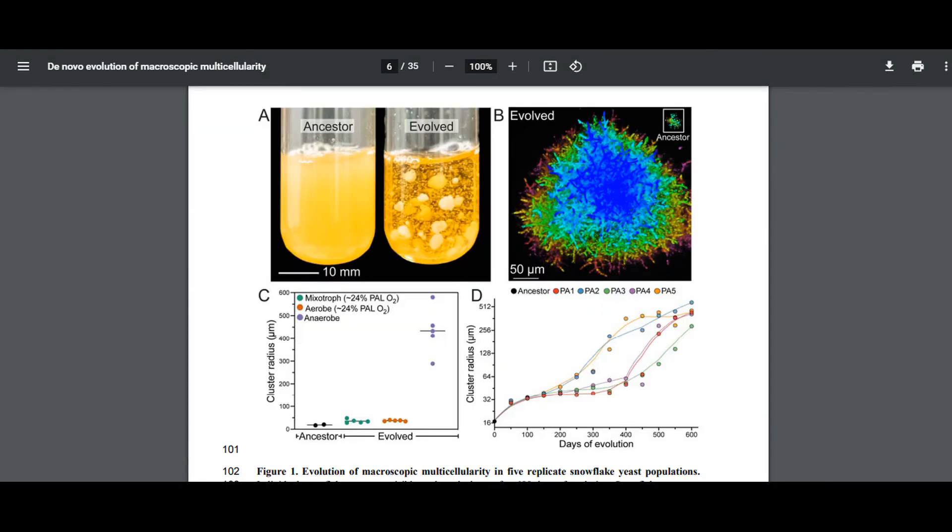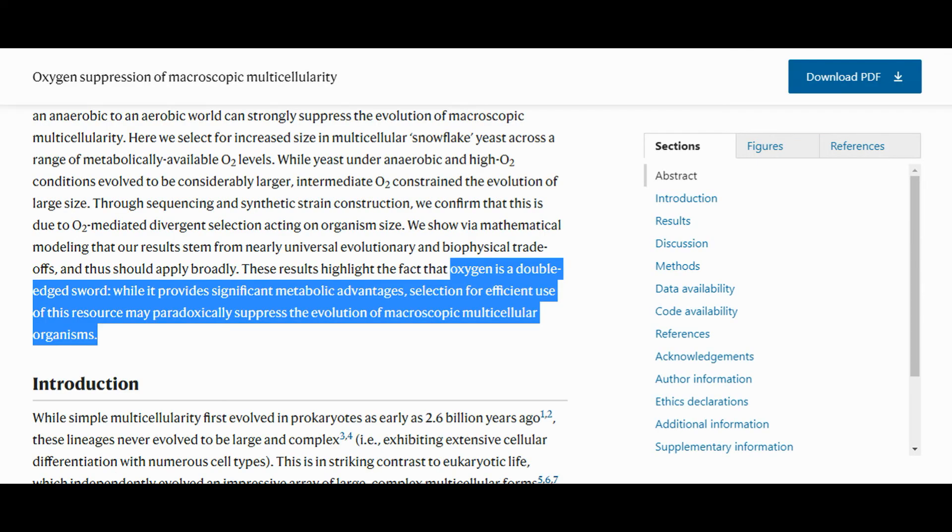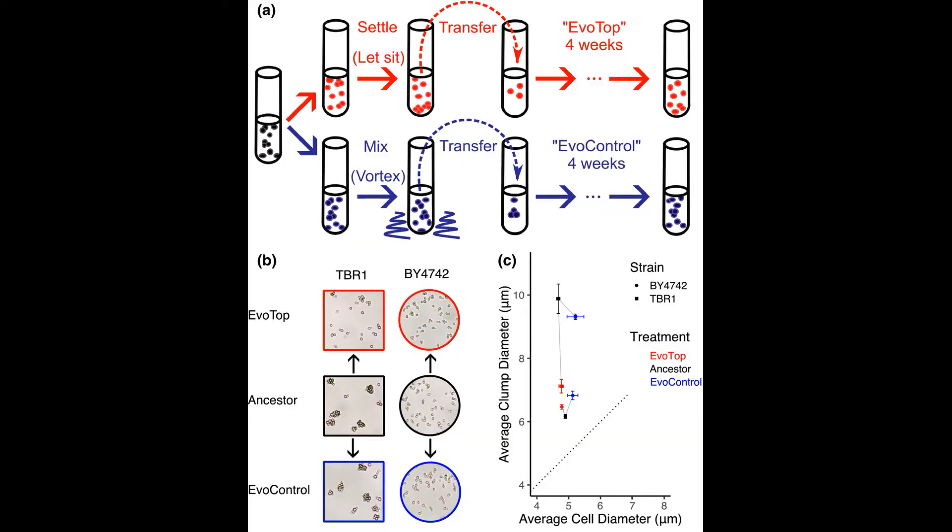The researchers began their experiment by first deleting the ACE2 open reading frame, which allowed all the populations to become multicellular. The researchers also generated five replicate populations that were incapable of aerobic respiration, so five populations were anaerobic, five were aerobic, and five could switch back and forth. Only the anaerobic populations achieved macroscopic sizes, in line with earlier hypotheses that, oxygen is a double-edged sword. While it provides significant metabolic advantages, selection for efficient use of this resource may paradoxically suppress the evolution of macroscopic multicellular organisms. The researchers then evolved all 15 populations for more than 600 rounds of growth and selection, which is equivalent to over 3,000 generations.